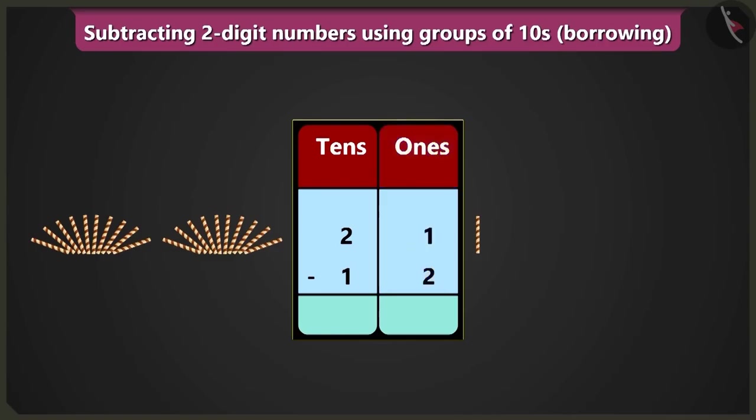Yes, you are right. You will have to do the subtraction of the numbers in the box of ones. Hmm, but we cannot subtract two from one in the box of ones. So we will borrow one ten from two tens from the box of tens.